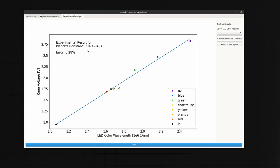The calculated result for Planck's constant is reported in the upper left corner and, as you can see, the results for my LEDs find that Planck's constant is 7.07 times 10 to the negative 34 joule seconds, which is off by just 6.28% of the currently accepted value of 6.626 times 10 to the negative 34 joule seconds.